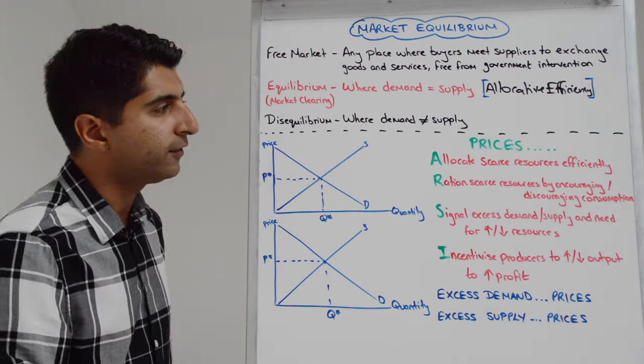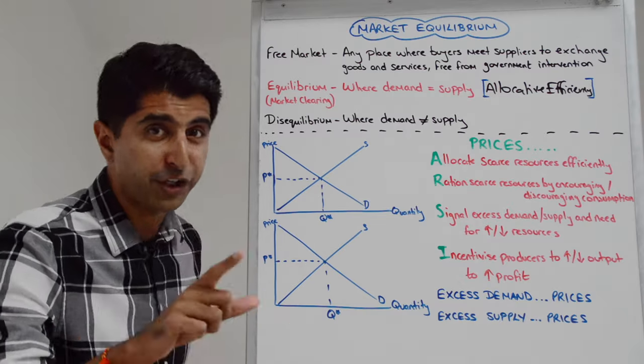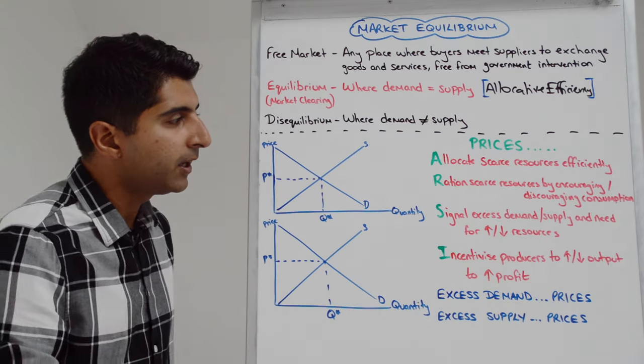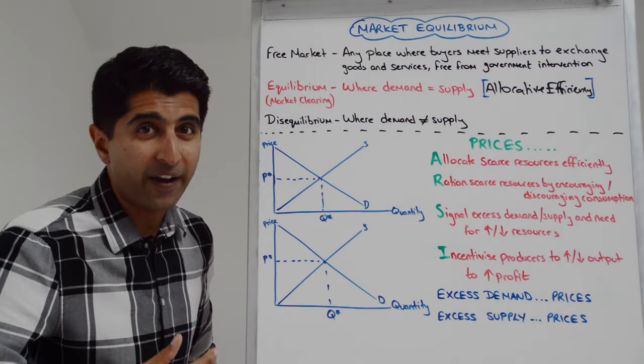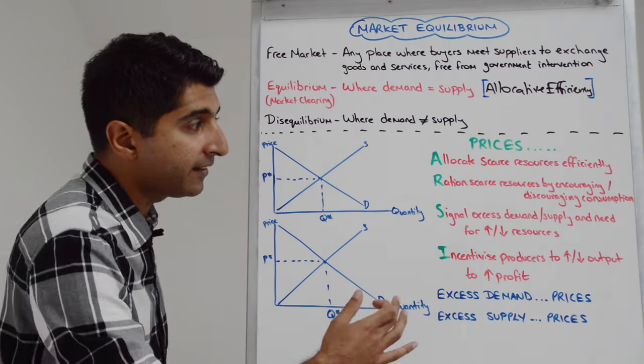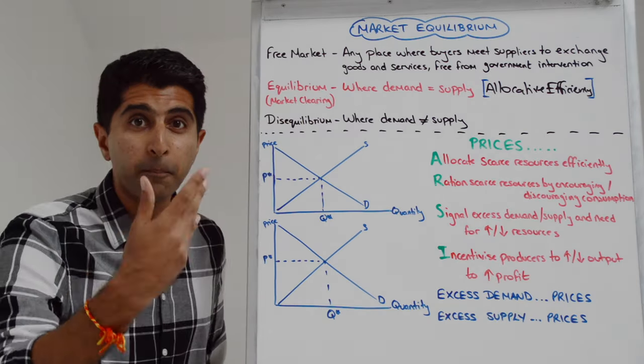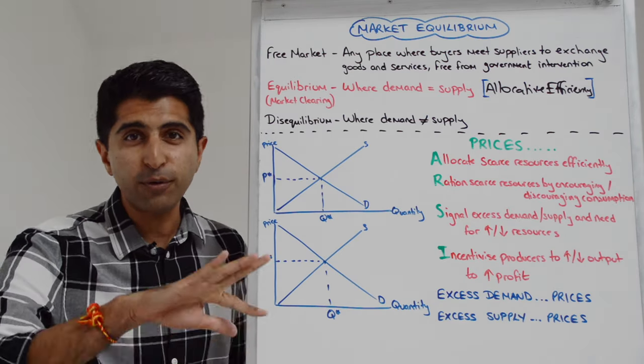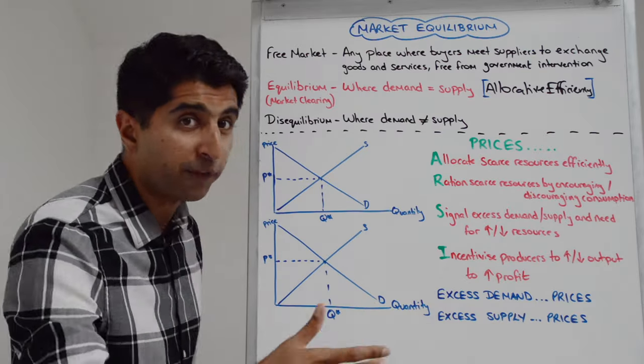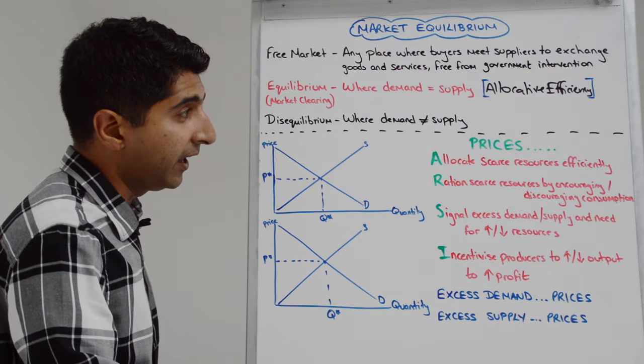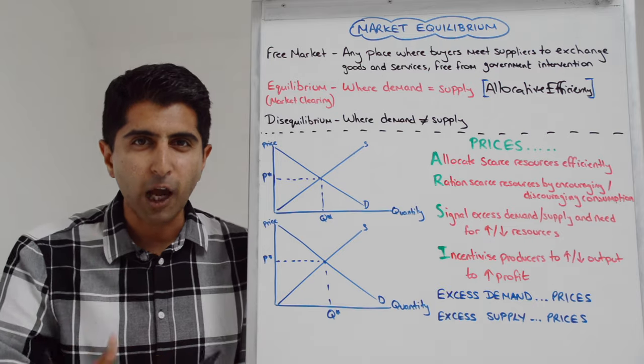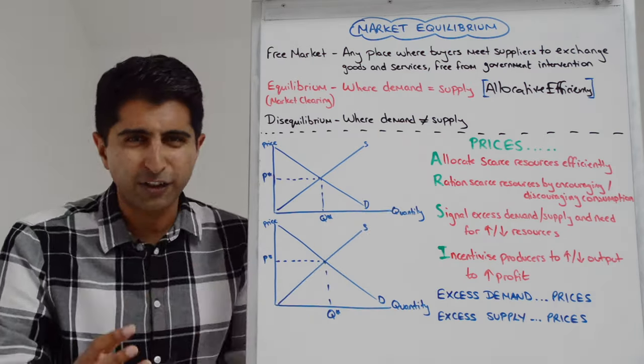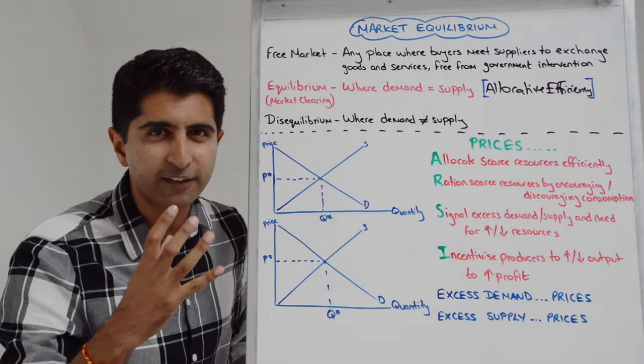What do we mean? What do prices do? Well, their core function, A, is to allocate scarce resources efficiently. We know that happens at equilibrium. Prices signal the fact that there have been excess demands or excess supplies, but they also signal the need for more or less resources in the market. Prices incentivize producers to increase or decrease their output in order to profit maximize, to make more profit. Prices also ration scarce resources by encouraging or discouraging consumption. So that's what the forces are. Just think ARSEY. Great way to get all of these learned.